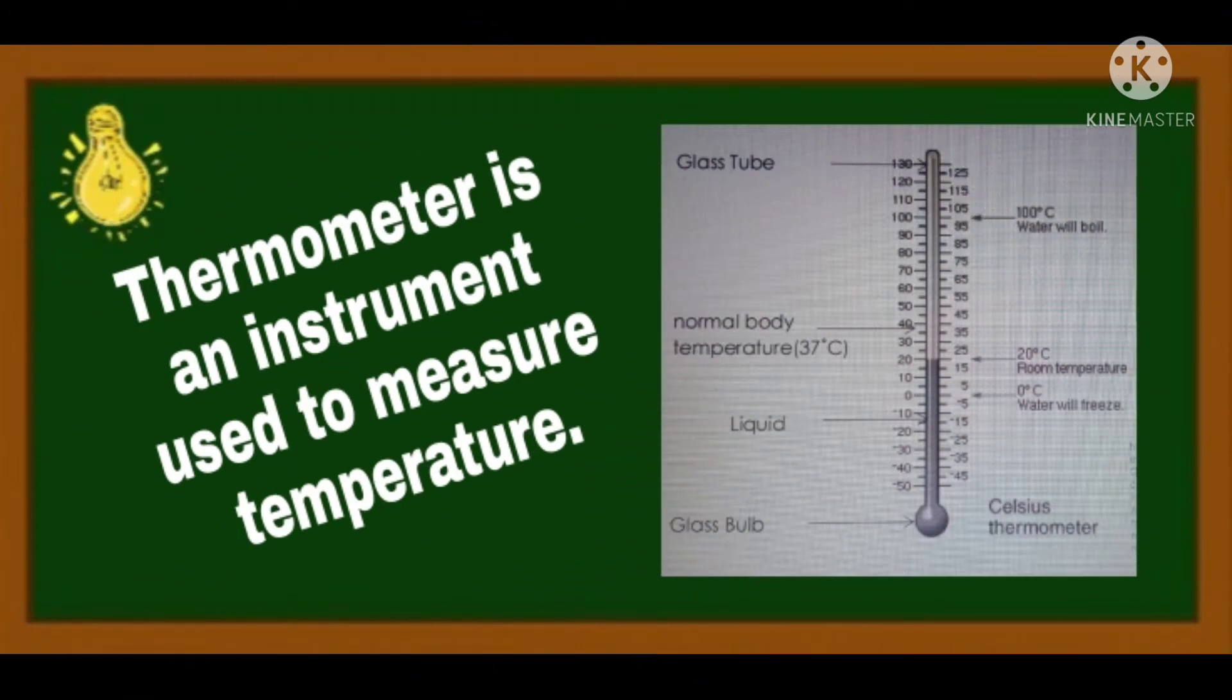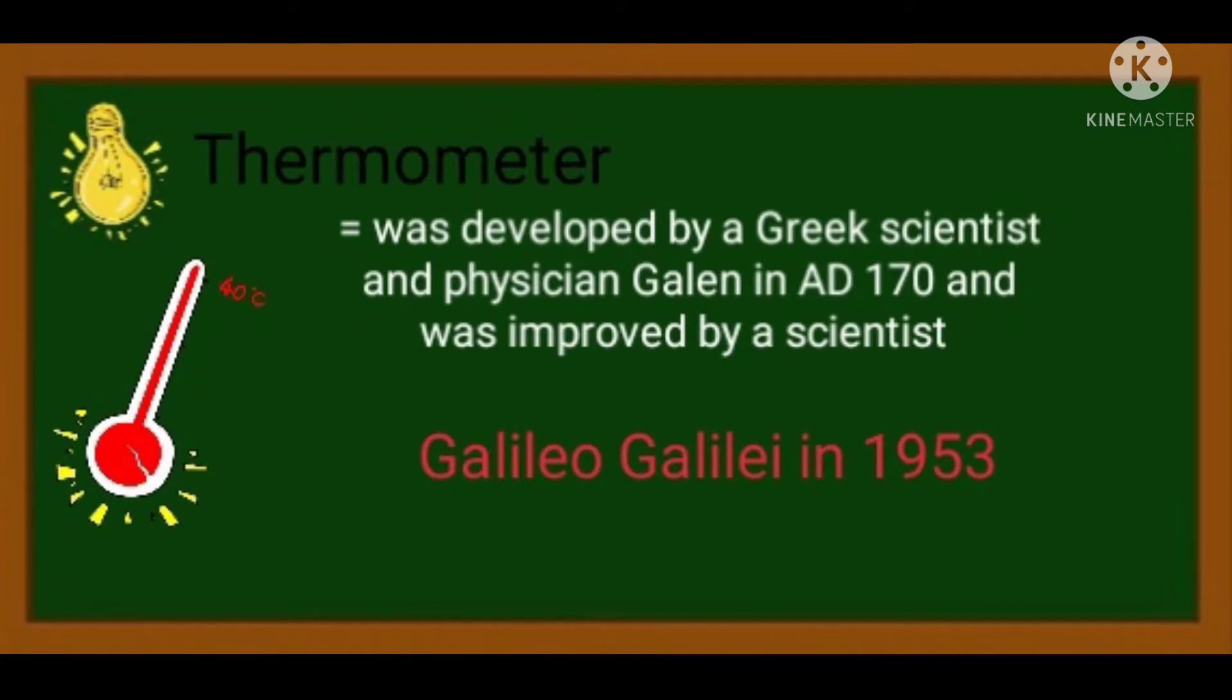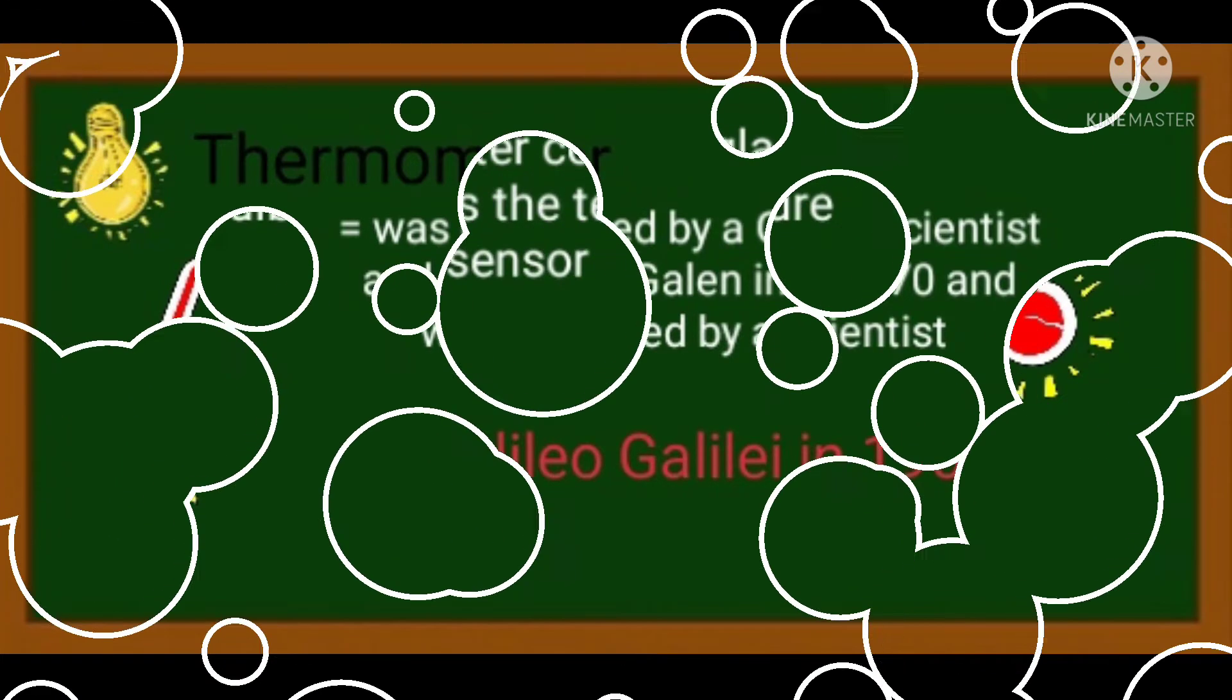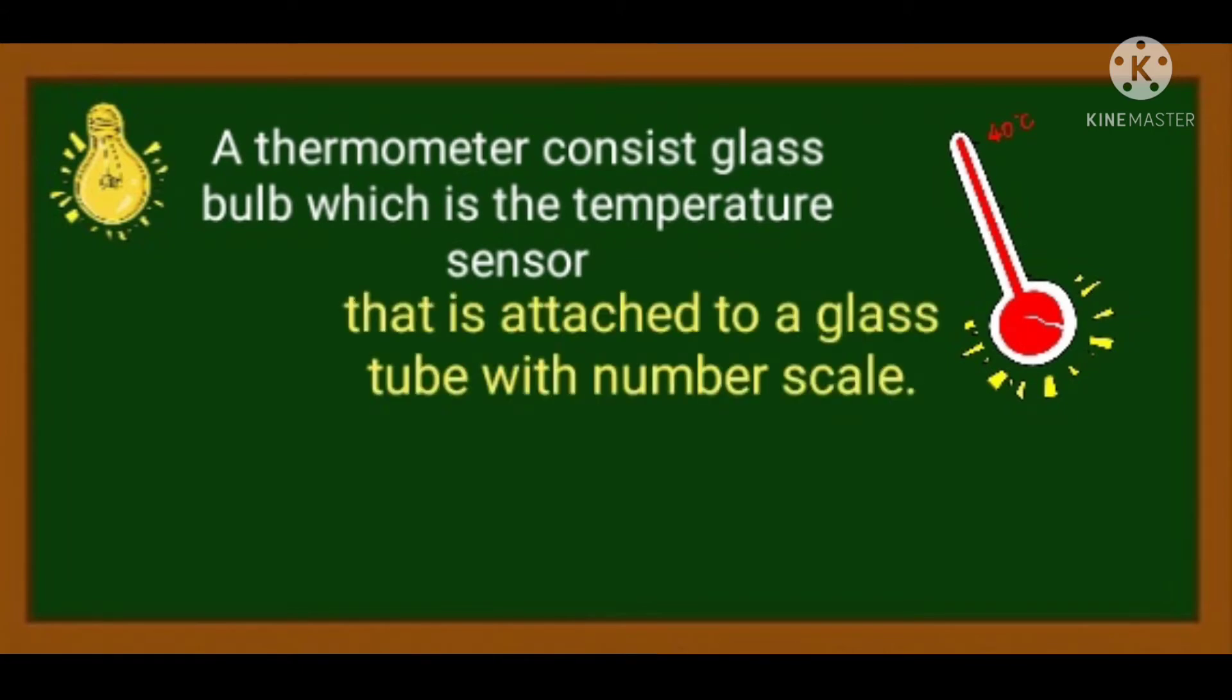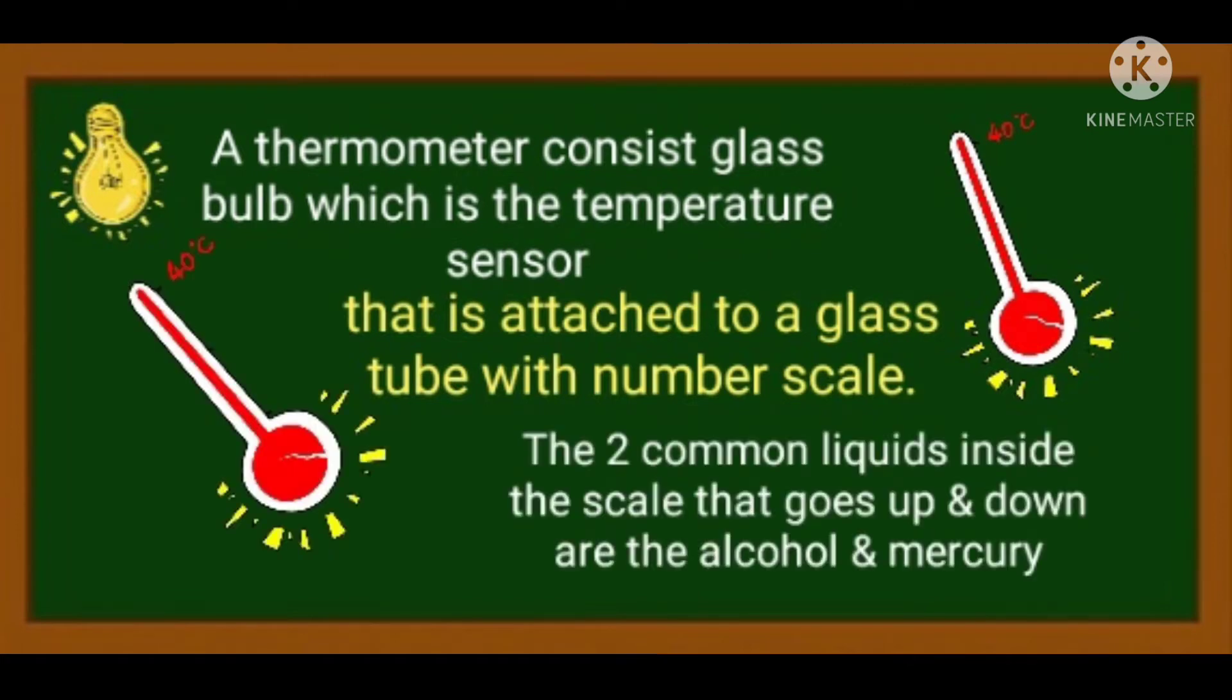What is a thermometer? A thermometer is an instrument used to measure temperature. It was developed by a Greek scientist and physician Galen in AD 170 and was improved by a scientist Galileo Galilei in 1593. A thermometer consists of glass bulb which is the temperature sensor that is attached to a glass tube with a number scale.